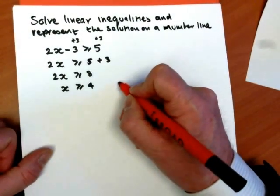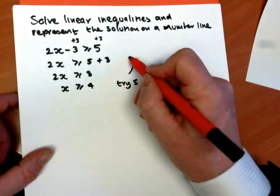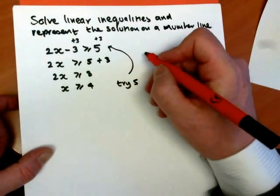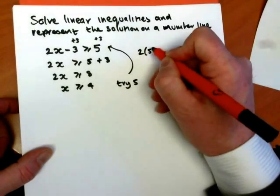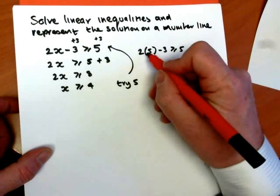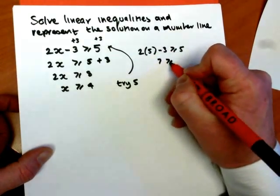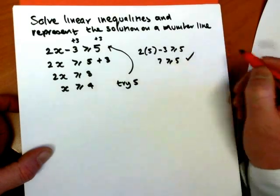Now if you try a value, say like 5, so say try 5 in the original. Then we've got 2 times 5 minus 3 is greater than or equal to 5. 2 times 5 is 10, 10 take 3 is 7. And of course 7 is greater than or equal to 5. 7 is greater than 5.